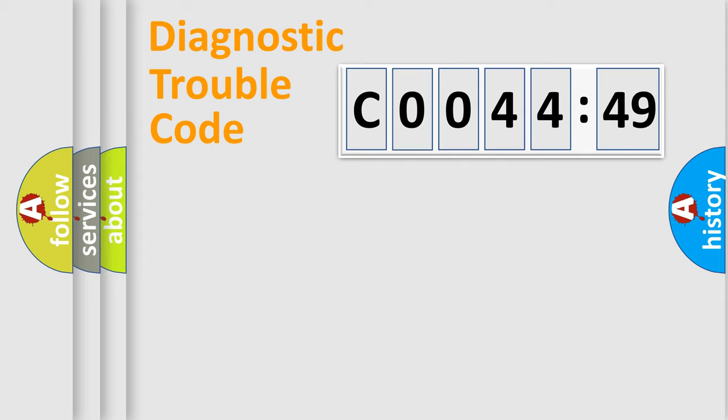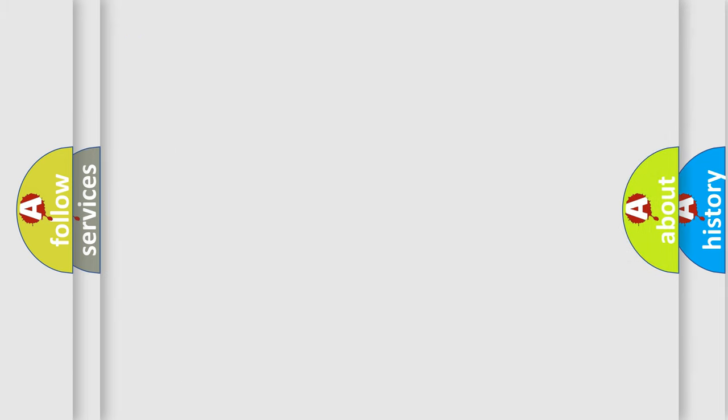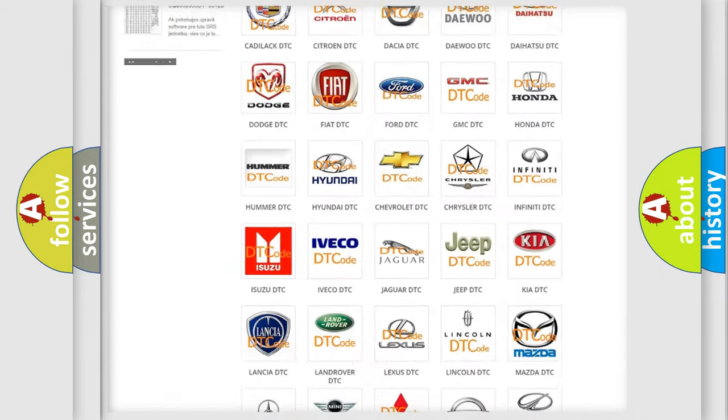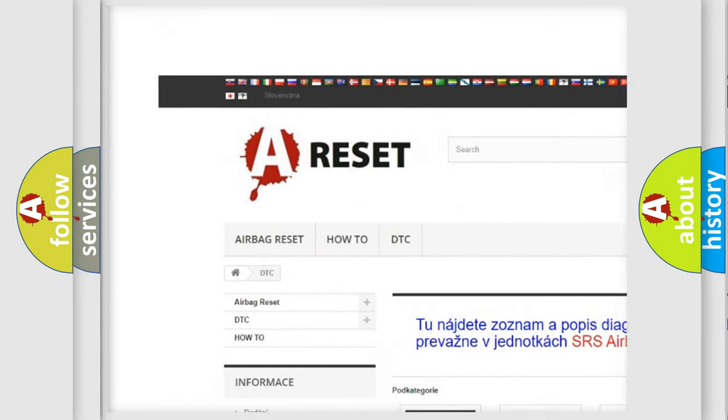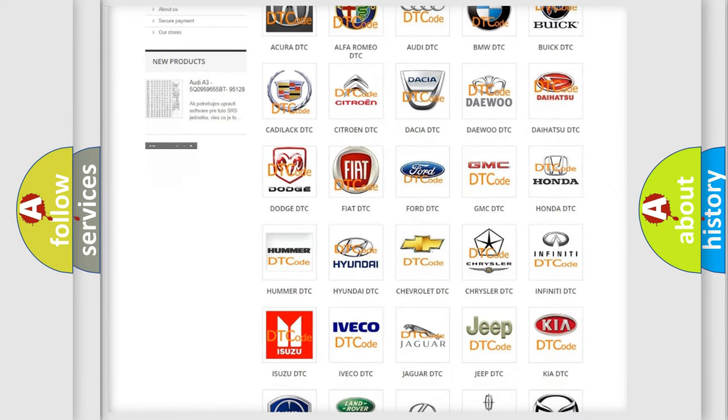Our website airbagrest.sk produces useful videos for you. You do not have to go through the OBD2 protocol anymore to know how to troubleshoot any car breakdown. You will find all the diagnostic codes that can be diagnosed in Chrysler vehicles. Also many other useful things. The following demonstration will help you look into the world of software for car control units.